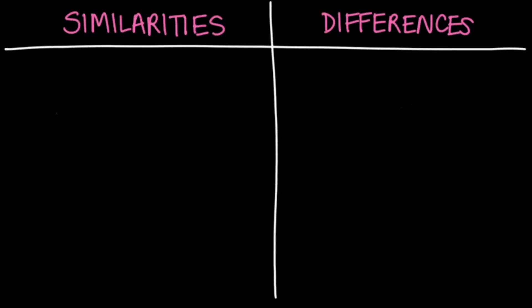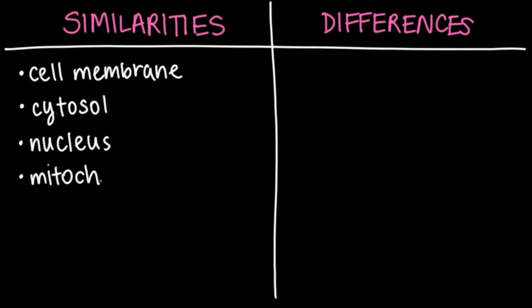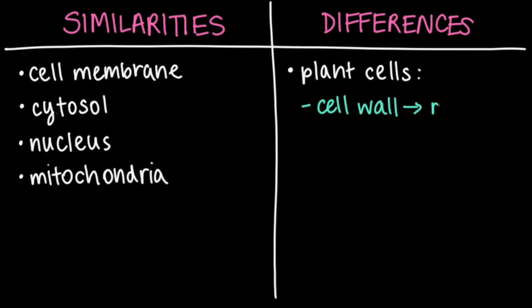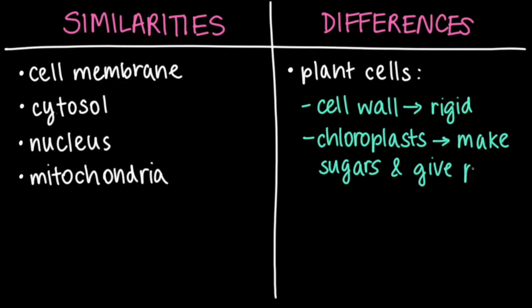In summary, we identified several similarities and differences in our comparison of animal and plant cells. While both cell types have a cell membrane, cytosol, a nucleus, and mitochondria, plant cells have a cell wall that makes them stiff and rigid — think about celery stalks — and they have chloroplasts, which make sugars and give plants their green color. All of these are just a handful of the similarities and differences between plant and animal cells. The differences we've covered are a big part of what makes plant and animal cells so distinct and unique from each other. These differences are why we don't see green lions that photosynthesize using chloroplasts, or floppy raw veggies with cell membranes but no cell walls.